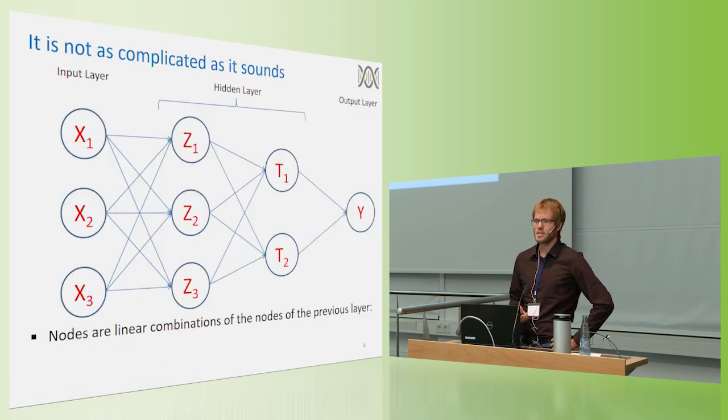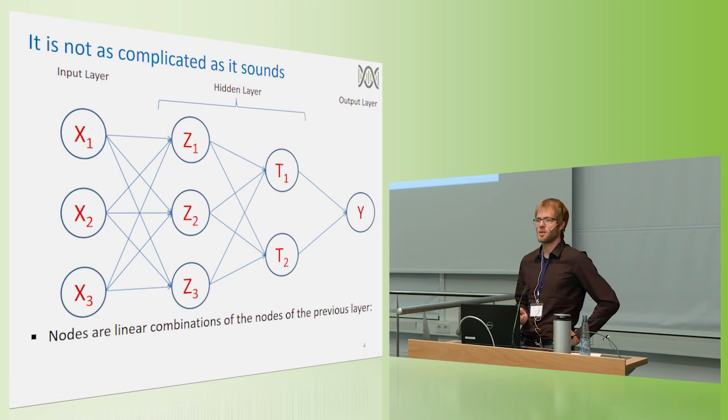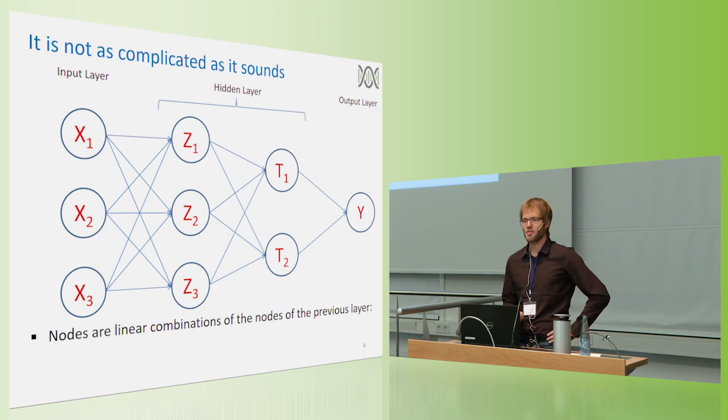And when looking at the deep learning network, it typically looks like this. We start on the left-hand side with some input variables, for example SNP data, and one ends up with some output values, for example, our breeding values or phenotypes.